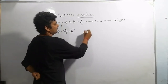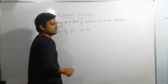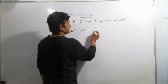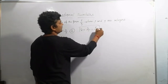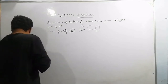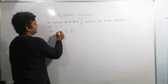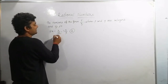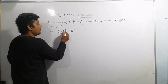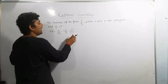For example, if we take the number 2, we can write it as 2 by 1, which is in the form of P by Q — so 2 is a rational number. Similarly, 4 by 5 is in fraction form, also in the form of P by Q. Minus 7 by 9 is also in the form of P by Q. These are all types of rational numbers.